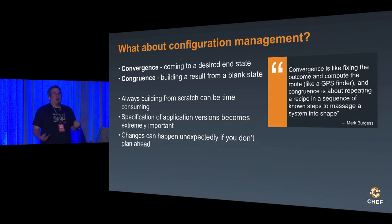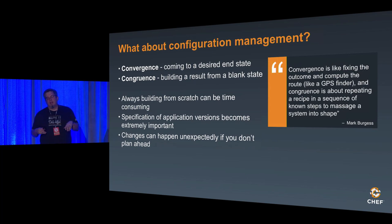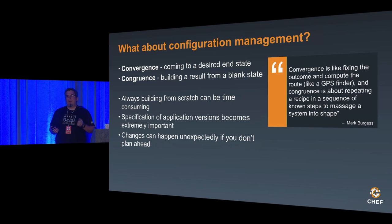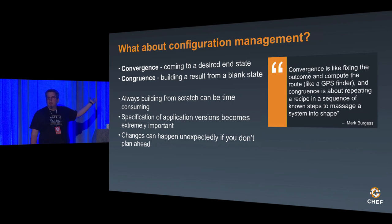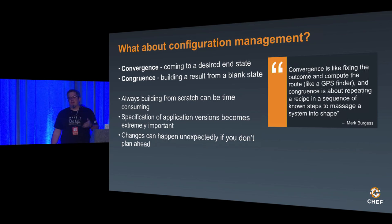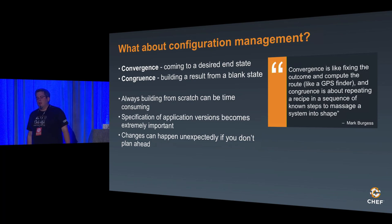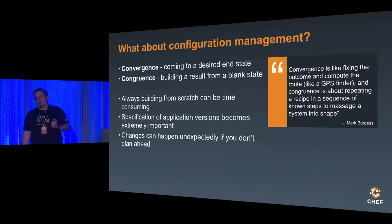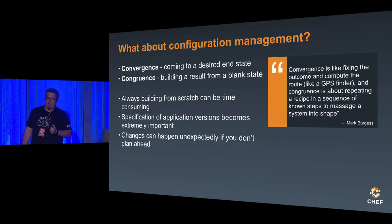So what about configuration management? I like configuration management — I work at Chef. When we talk about it, I want to discuss two terms from Mark Burgess, the scientist who invented automated configuration management. He says: convergence is like fixing the outcome and computing the route, kind of like a GPS finder. Congruence is about repeating a recipe in a sequence known to massage the system into shape.